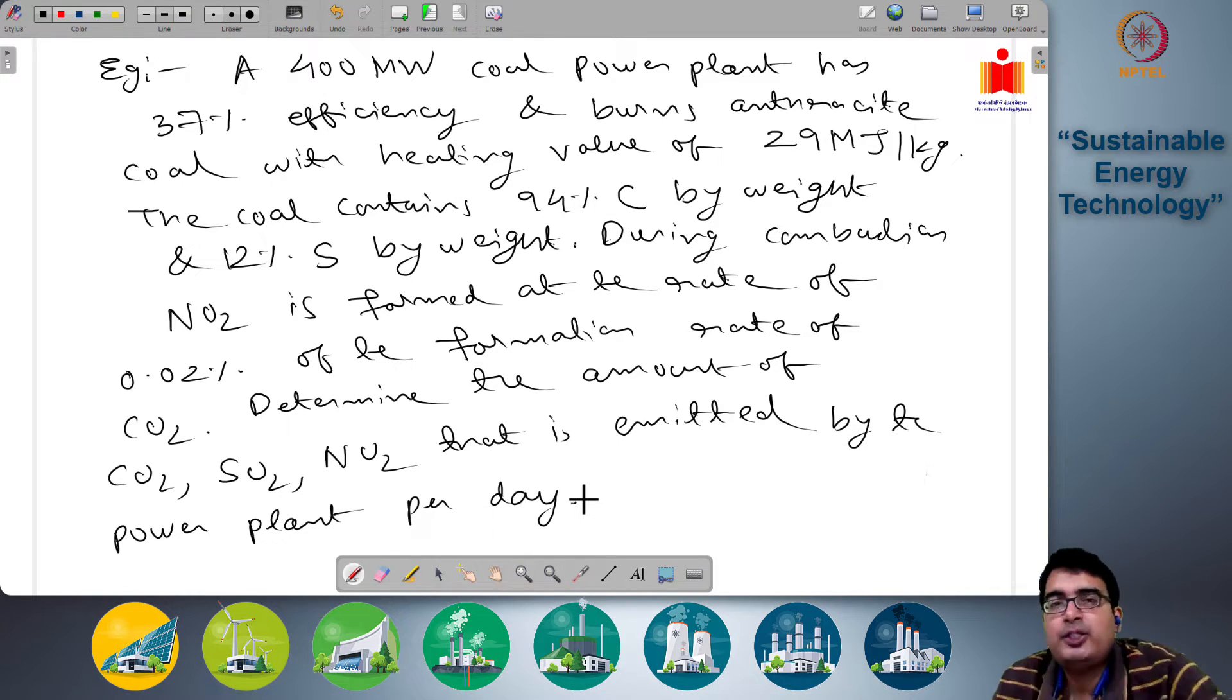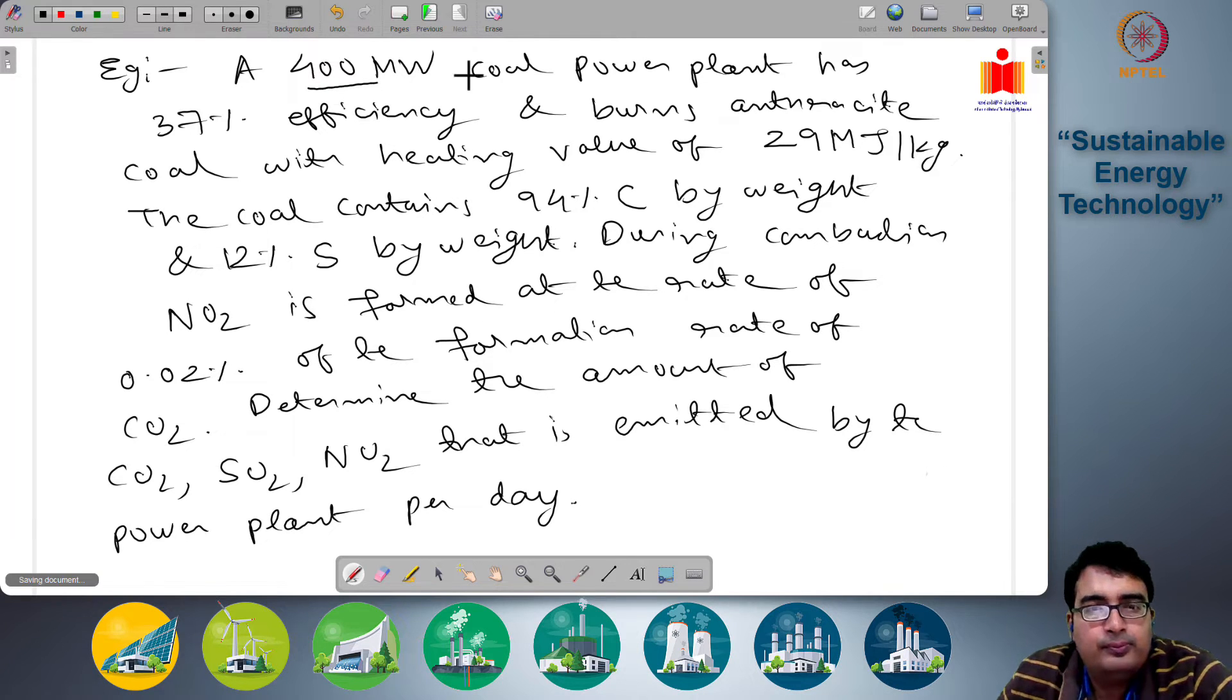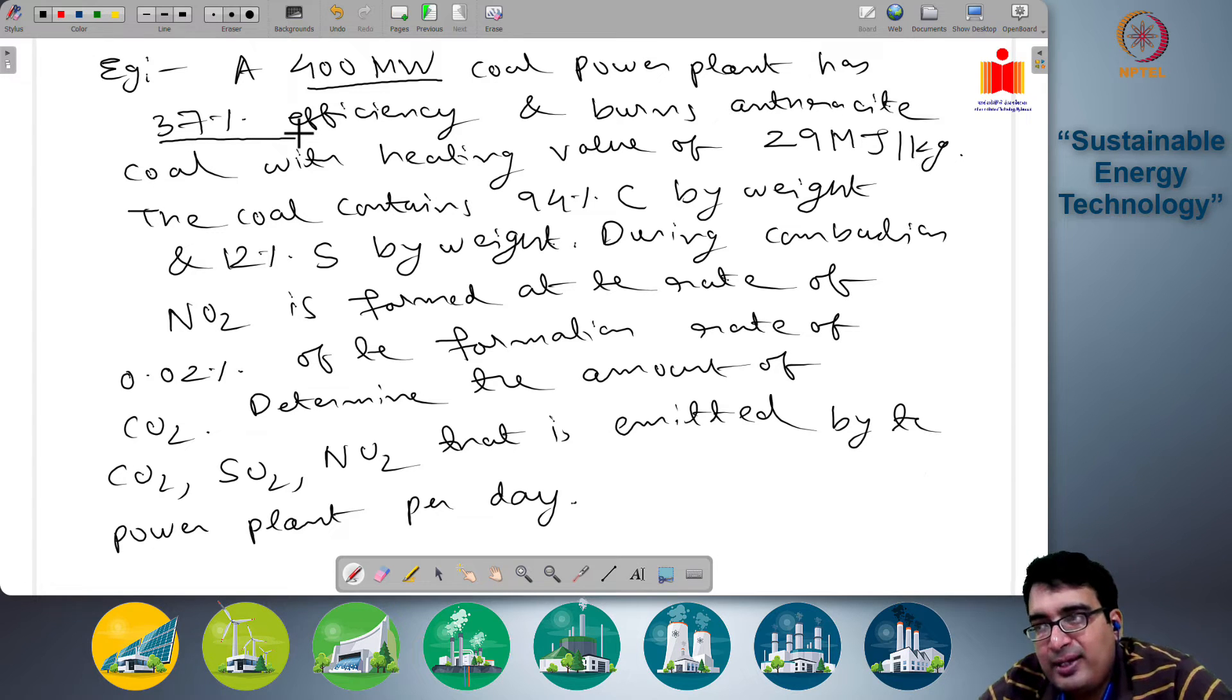So what information do we have? The power generation rate of this power plant is 400 megawatts, so 400 megajoules per second of electrical energy is being generated. It has 37% efficiency so we can find the heat production rate in this power plant as well. It's burning anthracite coal which is 29 megajoules per kg, its heating value. That is the amount of heat liberated when 1 kg of this coal is burnt is 29 megajoules.